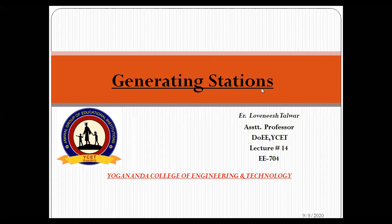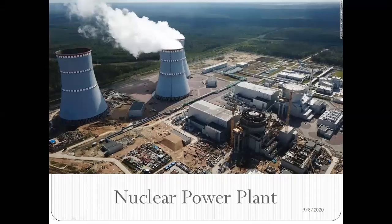In a nuclear power plant, the most important component is the nuclear reactor. In the nuclear reactor, the nuclear fission process takes place. The nuclear energy of a radioactive element like uranium is converted into heat energy. This heat energy is used to boil the water, which becomes steam, and then high pressure steam strikes the steam turbine and the turbine starts rotating. The turbine is coupled with an alternator, and what will happen is...